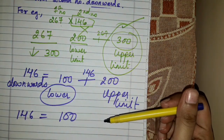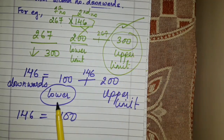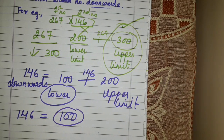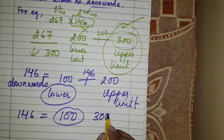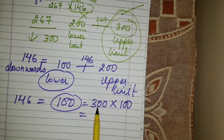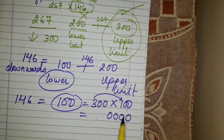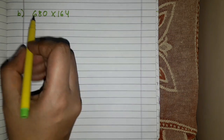So 267 rounded upwards gives 300, and 146 rounded downwards gives 100. Now let's multiply: 300 into 100. We do direct multiplication — two zeros here and two zeros here, so write four zeros first, and 3 into 1 gives 3. So the answer is 30000.